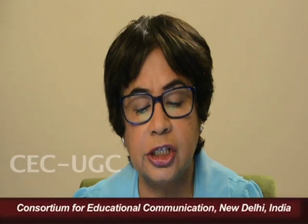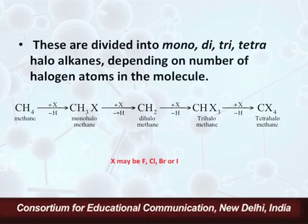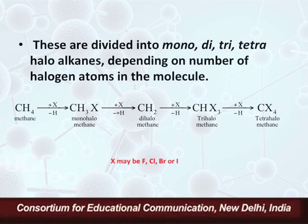Alkyl halides can be divided into mono, di, tri, or tetrahalogenoalkanes depending on the number of halogen atoms in the molecule. Taking the example of methane, if we replace one hydrogen with a halogen atom it is a monohalide; if two hydrogens are replaced it is a dihalide; and if three or four hydrogens are replaced, then it is a tri- or tetrahalogenoalkane respectively.